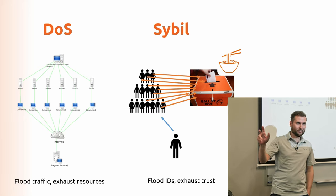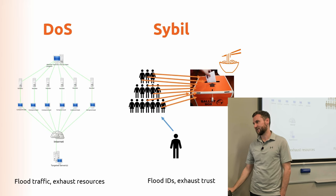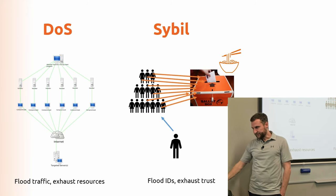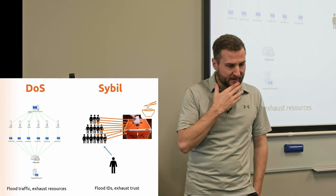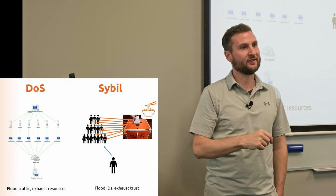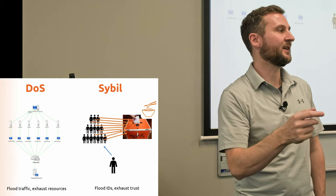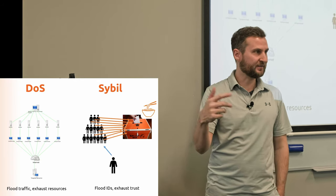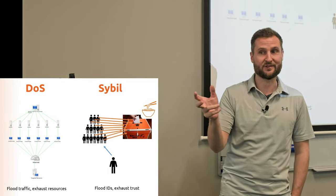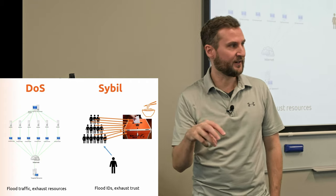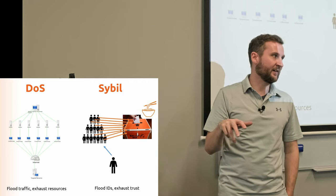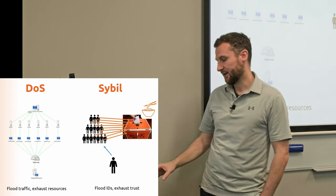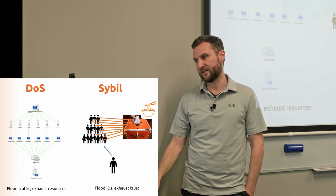These two types of attacks — denial of service and Sybil — are common in all computing infrastructure, and since blockchain is a subset, they apply here too. The denial of service or DDoS: the idea is you're going to flood some resource with requests. A common example is a website — you ping a server asking it to return a page, which takes resources. Most web servers are run in a distributed manner with cloud hosting to handle traffic spikes, and providers work to prevent denial of service attacks.